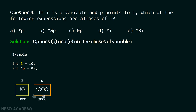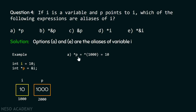Pictorially: variable i contains value 10 at address 1000, and pointer p contains address 1000 and is itself at address 2000. For option (a), `*p` means `*(1000)` — p holds 1000, and dereferencing gives us the content at location 1000, which is 10. Therefore, `*p` equals 10, which equals i, so `*p` is an alias of i.